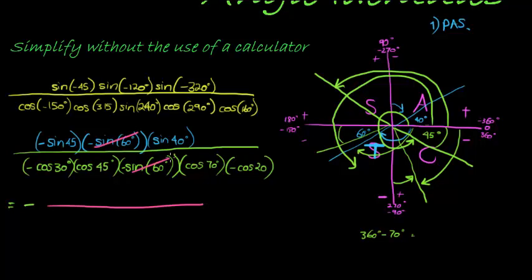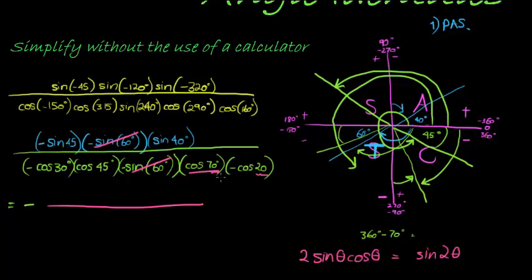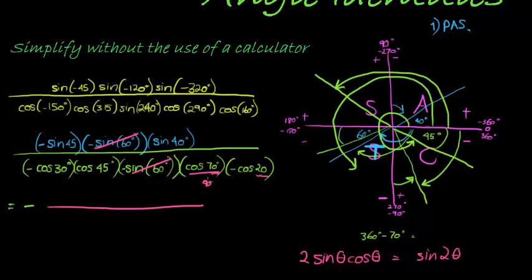What can we cancel? We can cancel sine of 60 with sine of 60, and sine of 45 with cosine of 45 — those cancel. Now I notice we have some non-special angles: cosine of 70 and cosine of 20. However, we also have sine of 40, which would work if I had sine of 20 and cosine of 20, because sine(θ)·cos(θ) = sin(2θ)/2. I want these two angles to be the same — and cosine of 70 equals sine of 20, because 70 = 90 − 20, meaning cosine changes into sine.